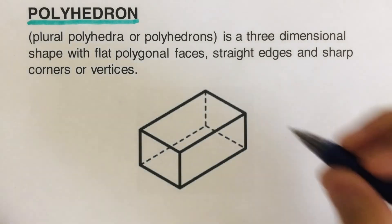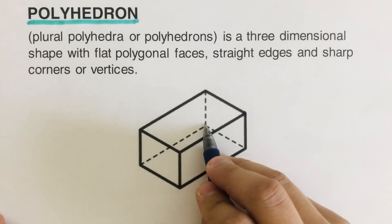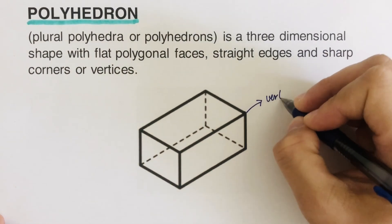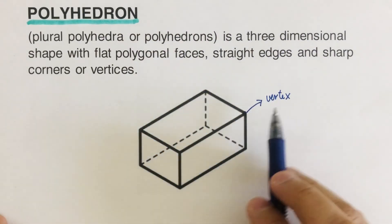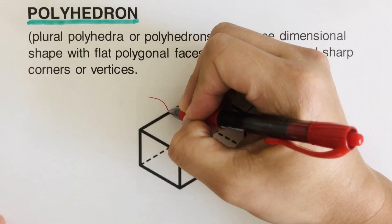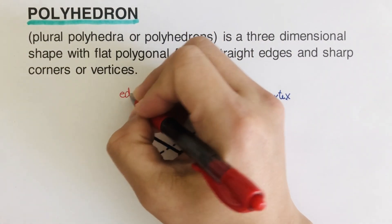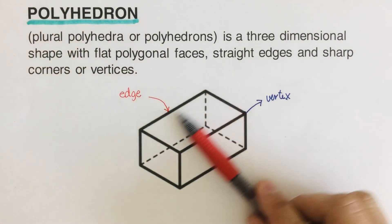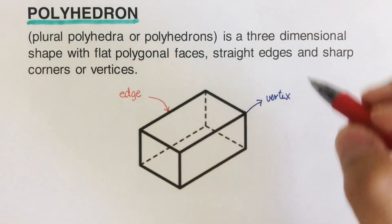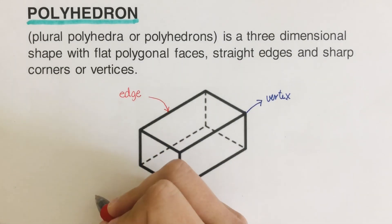So in the picture that we have here, let's start with this corner right here. Each of these corners — there are like eight of them — we call these corners a vertex. The plural for that would be vertices. Second part is this line. This line that connects from one vertex to the other vertex is called the edge. And then the flat surface here that serves as the covering for this solid side — we call this the face.